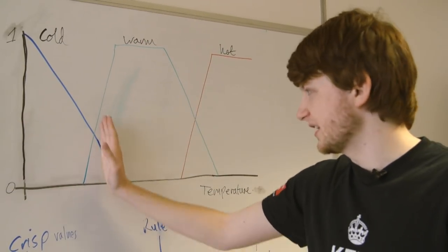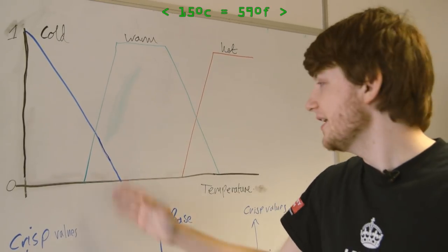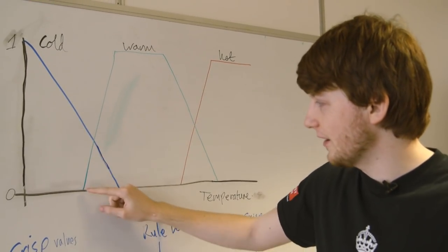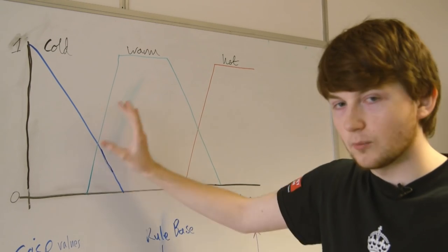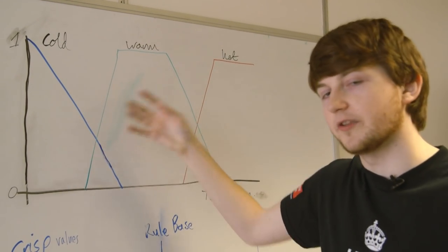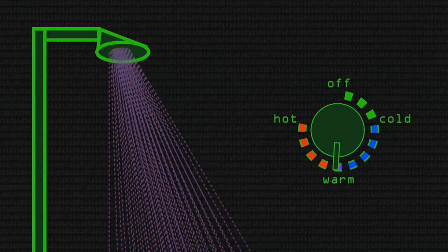Around, I don't know, probably about 15 degrees, I haven't put any actual values on here. Around this area, we now know that we're kind of mixing warm and cold. It's not strictly cold, it's not strictly warm. And then we have the same story with hot.